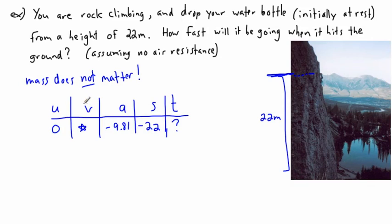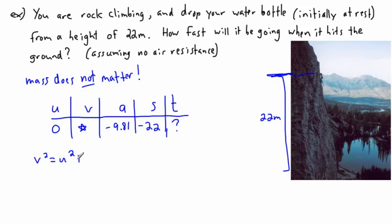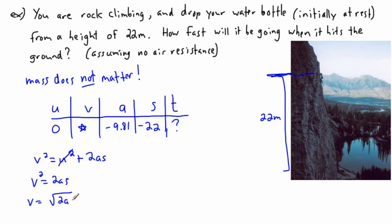My shopping list: I'm looking for an equation that has v and avoids t. Looking at the four equations, the one that works is v² = u² + 2as. Since u is zero, v² = 2as. Solving for v: v = √(2as). Technically it should be plus or minus when taking a square root, but since the question asks for speed, we're interested in the magnitude.